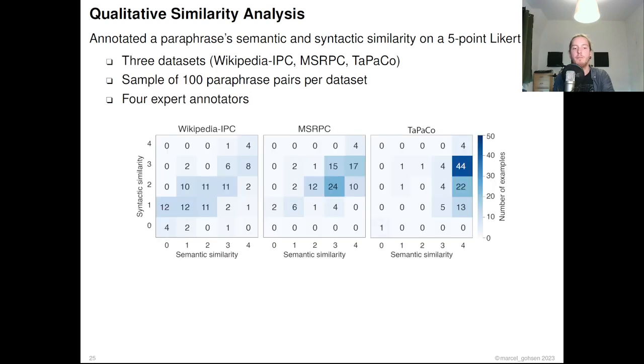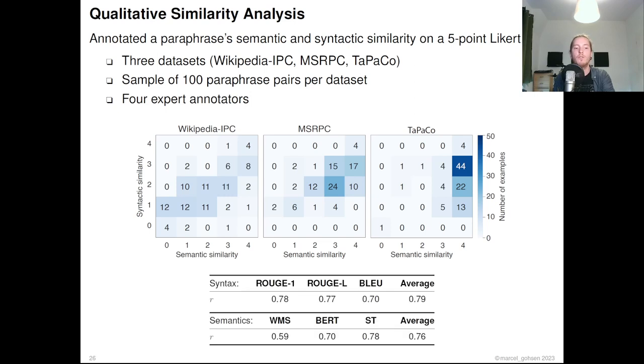Here we can see the distribution of the median judgment of the four annotators of the semantic similarity on the x and the syntactic similarity on the y-axis. We can further confirm the different semantic and syntactic similarities between datasets. For the MSRPC and our paraphrases, we can see a more uniformly distributed paraphrases along the main diagonal of semantic and syntactic similarity, while the majority of paraphrases from the TEPACO corpus are semantically close. We can also report high correlation of the chosen similarity metrics with our manual similarity judgments, which indicates their suitability for this experiment.